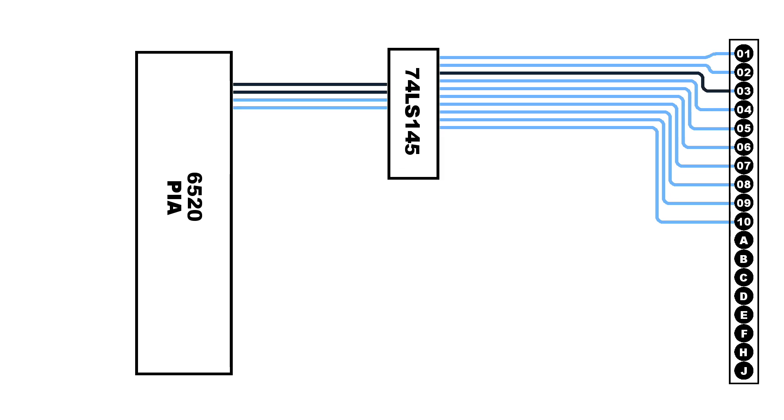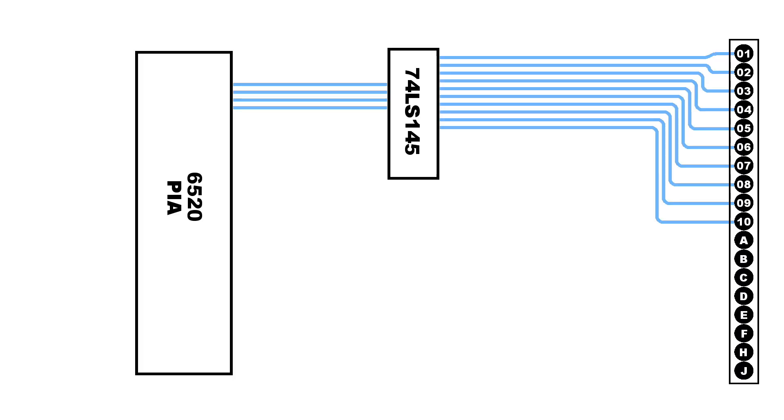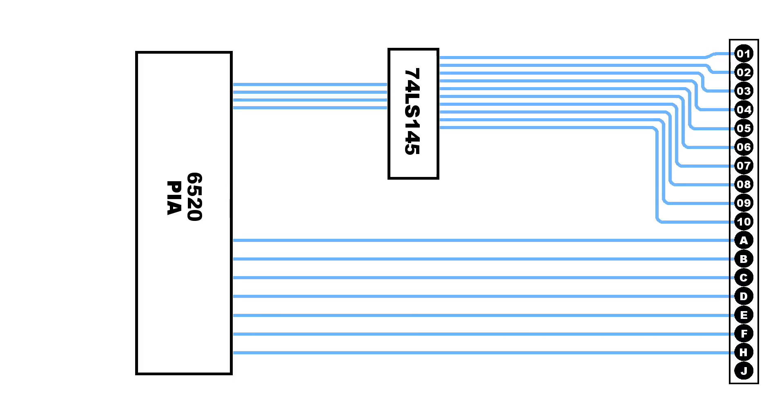The same process could be done without the decoder chip, but it would use 10 output lines. So, that frees up more I/O on the PIA chip for other things. As for the input lines, they essentially go straight to the PIA chip.